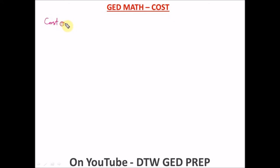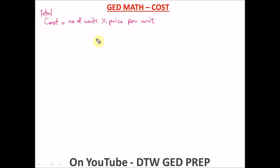So what is cost in maths? Cost is equal to the number of units multiplied by the price per unit. For example, if you want to buy some muffins and you get five or six muffins at a particular price, that gives you the total cost of whatever you want to buy. You can abbreviate this as C is equal to N times P, where you substitute known values into the formula.